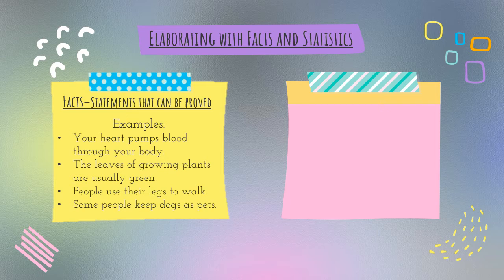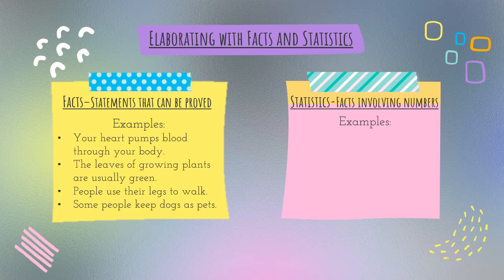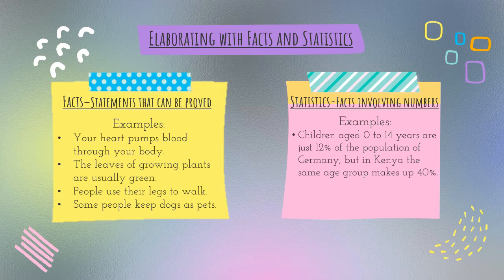Now let's talk about what statistics are. Statistics are just facts involving numbers. Once you add a number in there, it becomes a statistic. For example, children aged 0 to 14 years are just 12% of the population of Germany, but in Kenya, the same age group makes up 40% of the population. These are facts that can be proven — you would take a survey to find out these numbers, and someone did exactly that. They found that 12% of the people in Germany are children from 0 to 14, and 40% of the people in Kenya are children — almost half.